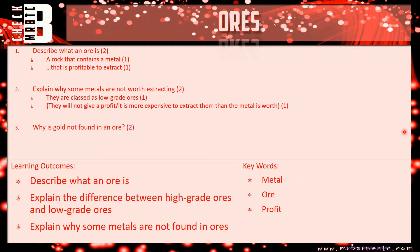Question three: why is gold not found in an ore? Nice and simple — it's unreactive, it does not react, it doesn't oxidise, and therefore it's found uncombined.